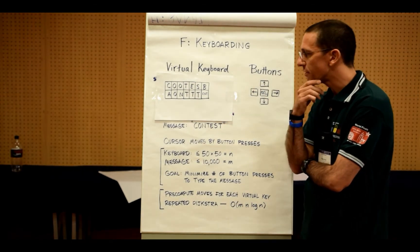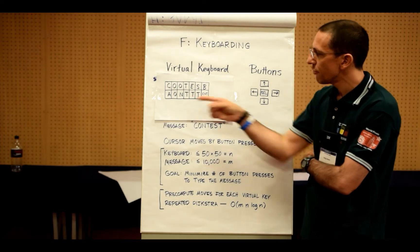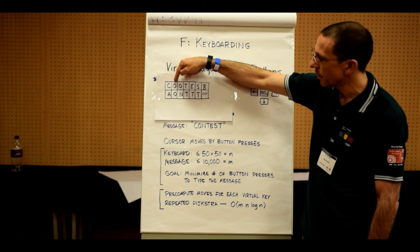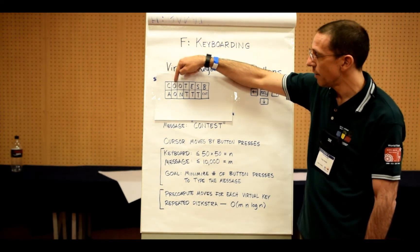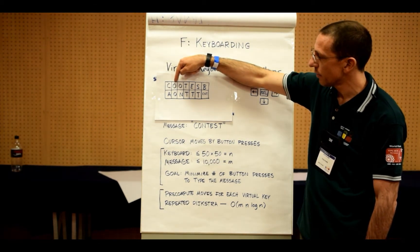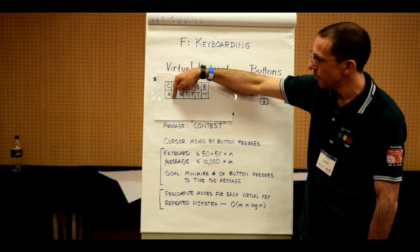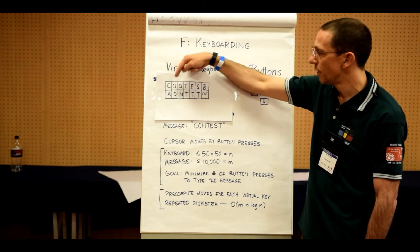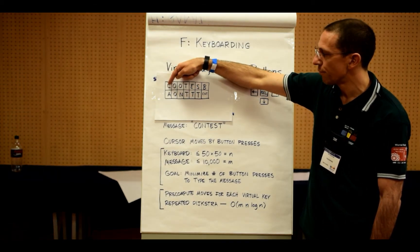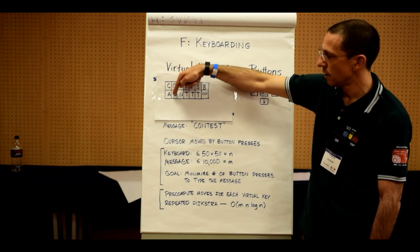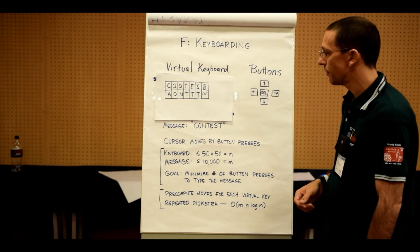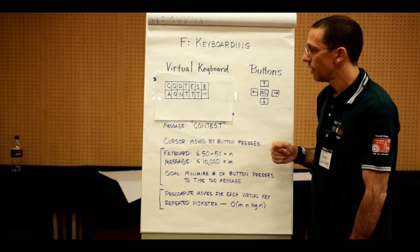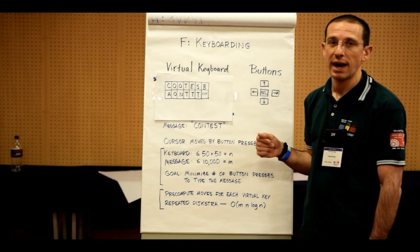So let's try to type the word 'contest' using this keyboard. Initially it looks like we should go C, O, but then if we are here, we can't get to N very easily because we either have to go down — which we can't do in this column — or we have to go right, then down, then left, which is not optimal. Our best bet is actually not to go to O first, but C, A, O, and then N, and so forth. So the optimal path for typing a message is not always the most direct path at each step.